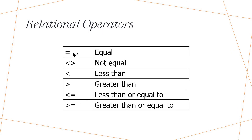Relational operators: equal returns true if the first number equals the second; not-equals-to returns true if they are not equal; less-than returns true if the first number is less than the second; greater-than returns true if the first number is greater than the second; and greater-than-or-equals-to returns true if the first number is greater than or equal to the second.